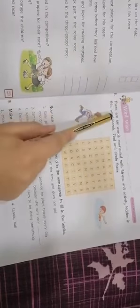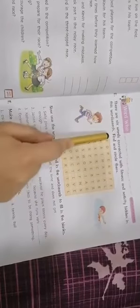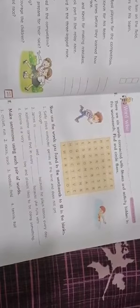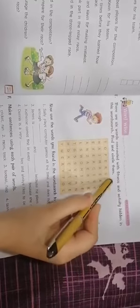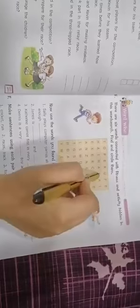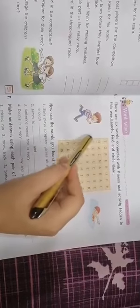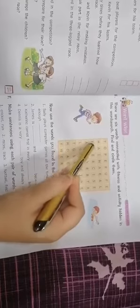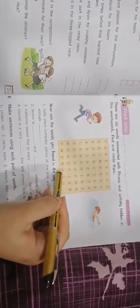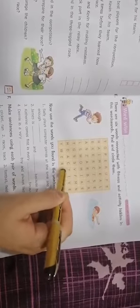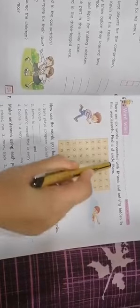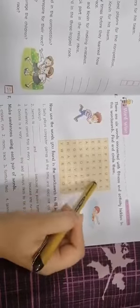Let's start our work. There are six words connected with fitness and activity hidden in the word search. Find and circle them. Now you have to find and circle six words. First word: fast, F-A-S-T. The second word is exercise. The third word is healthy. Active. Fit. And the last word is race.